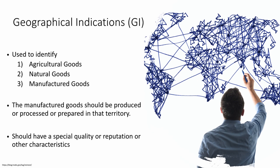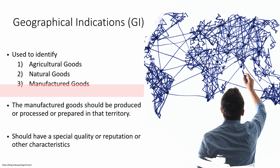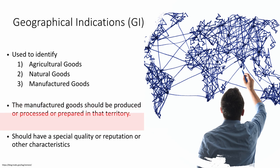What are geographical indications? Geographical indications, or GI, are used to identify agricultural goods, natural goods, and manufactured goods. The manufactured goods should be produced or processed or prepared in that territory. They should have a special quality, reputation, or other characteristics.